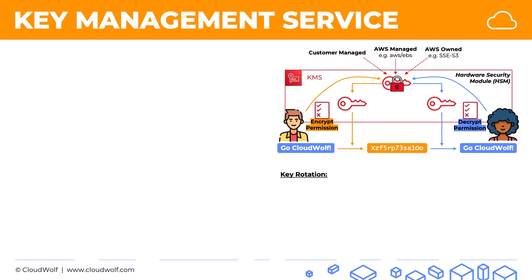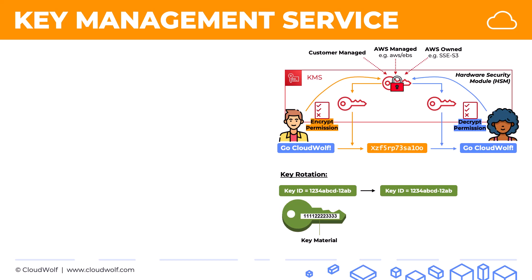Finally, in terms of rotation: a key has an ID, key material, and other metadata like when it was created and which account it applies to. When you rotate a key — meaning you change the key material for added security — your key ID doesn't change. The key ID stays the same, but the material does change, which is the purpose of rotation. At the same time, the old key material is saved and still attached to this key, so you can decrypt things you encrypted in the past.